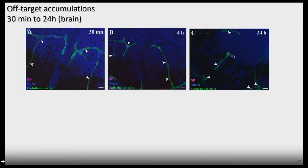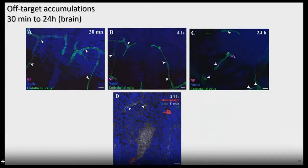We wondered whether nanoparticles going into the vasculature could also reach off-target accumulation sites such as the brain or liver. Looking at the brain at 30 minutes and 4 hours, nanoparticles were restricted to endothelial cells and did not cross the blood-brain barrier. While at 24 hours most were still restricted to endothelial cells, we again started to see phagocytes evenly loaded with nanoparticles. We could identify those cells as macrophages or microglia, which was quite strange.